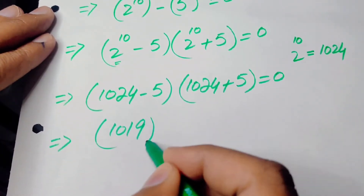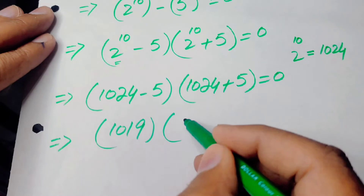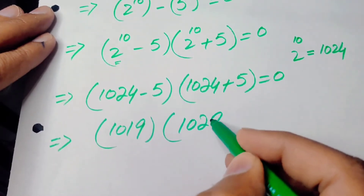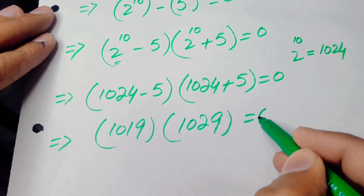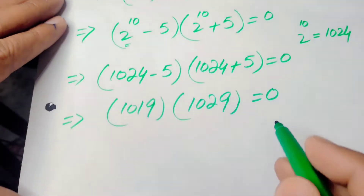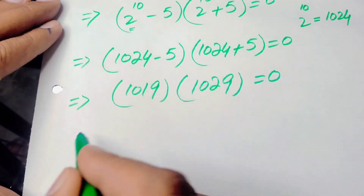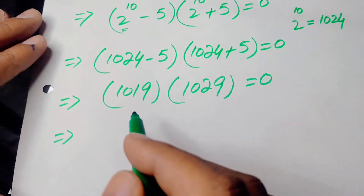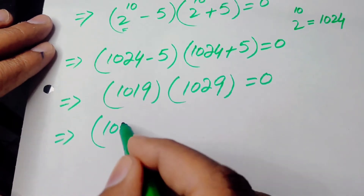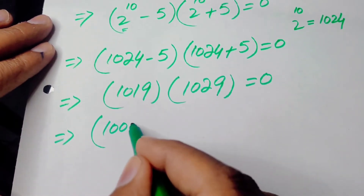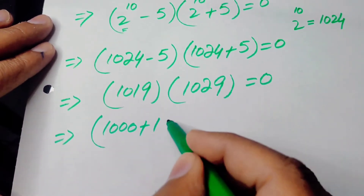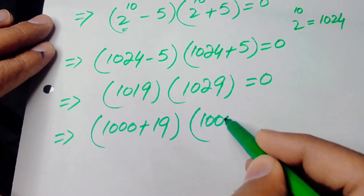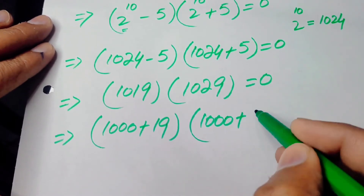After that we subtract and add these terms: 1024 minus 5 gives 1019, and 1024 plus 5 gives 1029, so we have 1019 times 1029 equals 0. We then rearrange by writing 1019 as 1000 plus 19, and 1029 as 1000 plus 29.